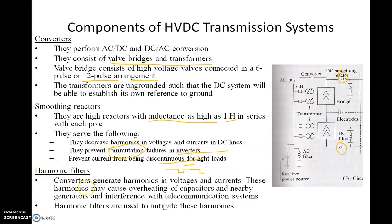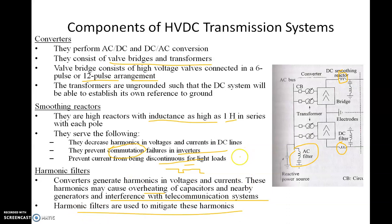Regarding harmonic filters: converters generate harmonics in voltages and currents. We have DC filters and AC filters on both sides. These harmonics cause overheating of capacitors and nearby generators, and interference with telecommunication systems, among other problems. That is why we use harmonic filters to solve this problem.